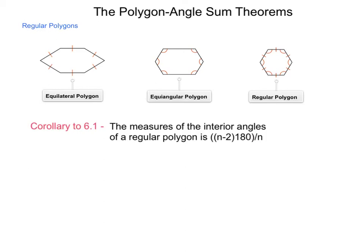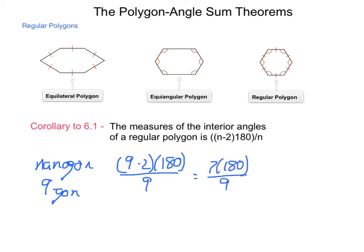So, if you had a regular nanogon, what would be the angle measurement of each angle? Well, a nanogon is a 9-gon. So we go 9 minus 2 times 180, all divided by 9. Well, 9 minus 2, of course, is 7. So we have 7 times 180 divided by 9. 7 times 180 is 1260. And if we divide that by 9, we come out with each angle inside of this nanogon being 140 degrees.